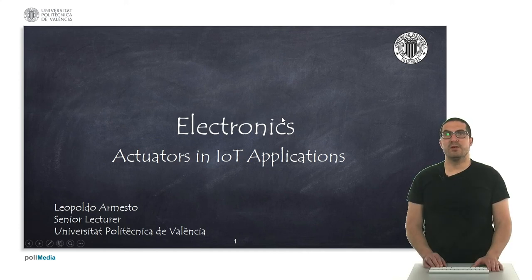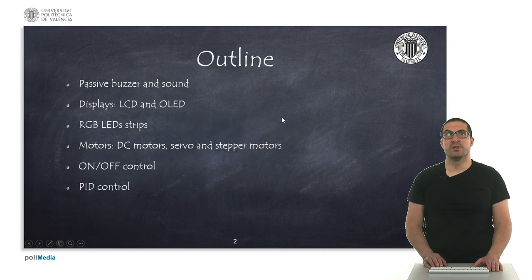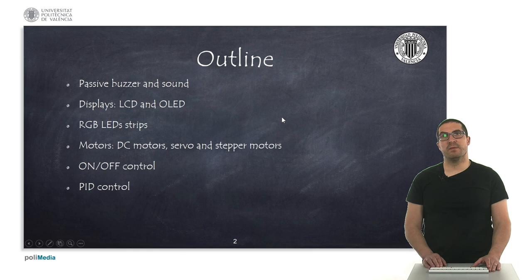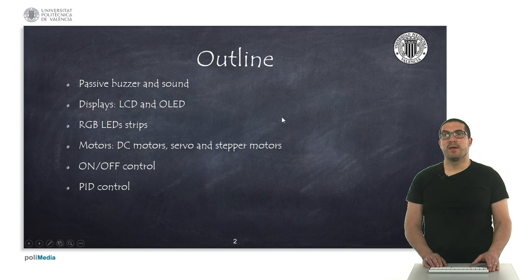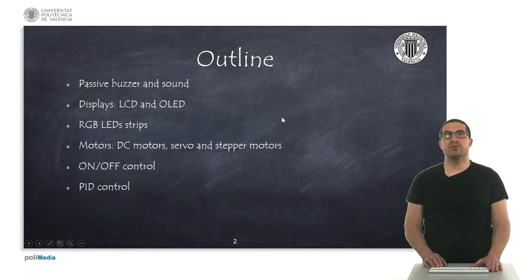Hello, my name is Leopold Armesto and in this presentation I'm going to explain about actuators that we commonly use in IoT applications. This is the outline of our presentation: we're going to introduce the passive buzzer and sound generation, also displays — the LCD and OLED displays and RGB LED strips. Then we're going to move to motors: DC motors, servo motors and stepper motors. And then we're going to talk about control — two different types: on-off control and PID control.